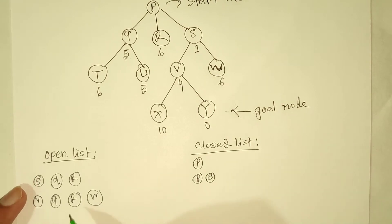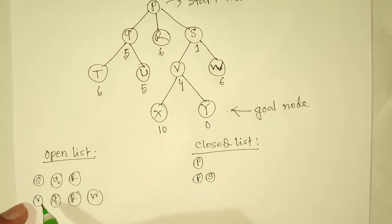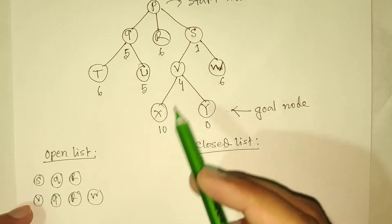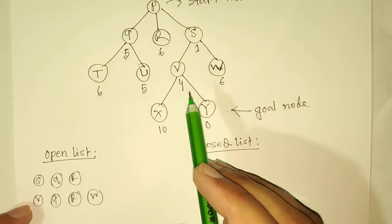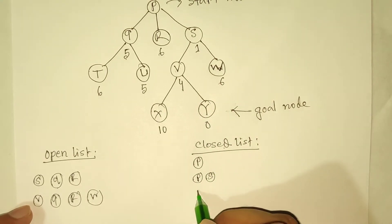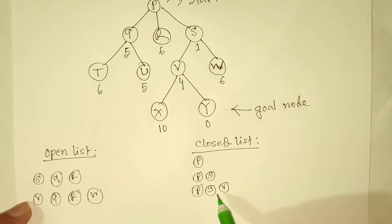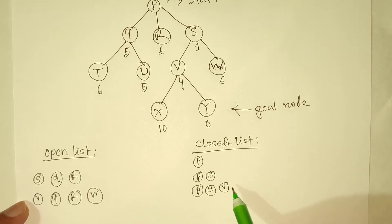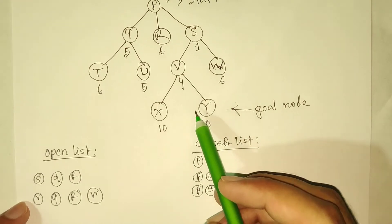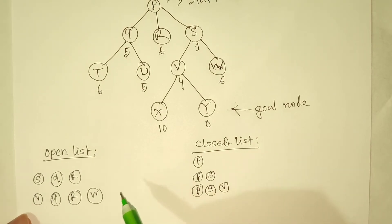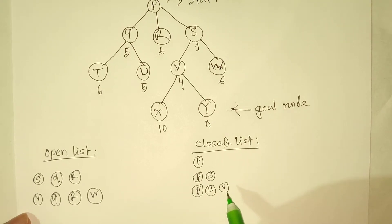Since S is not our goal node we again perform our searching algorithm by taking a node from the open list. We choose V because it has the smallest heuristic value among the current nodes. We visit V and add it into our closed list, so now we have P, S, and V. We check whether V is our goal node — it is not, our goal is Y, so we have to continue the algorithm.